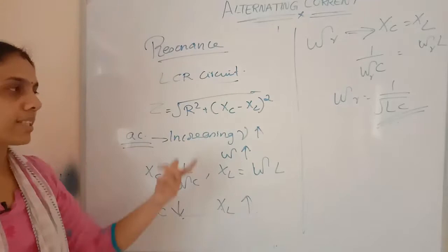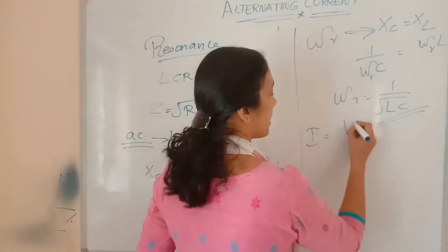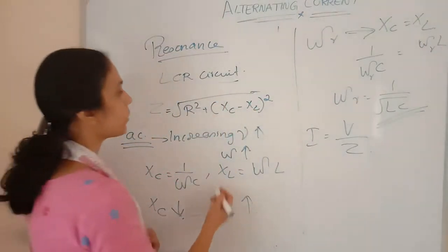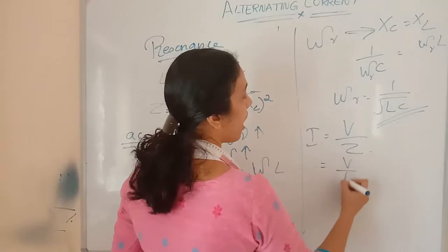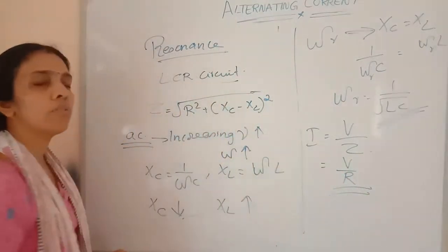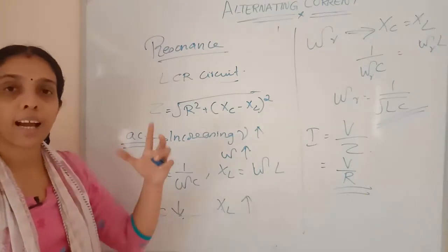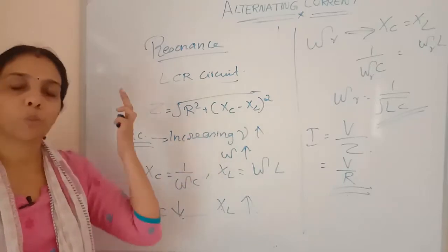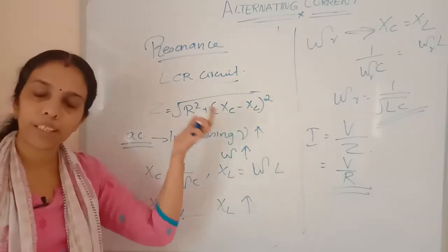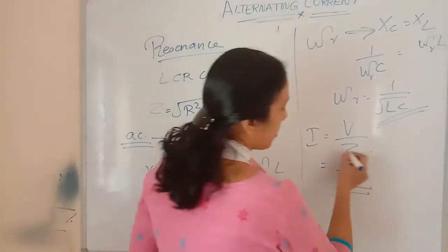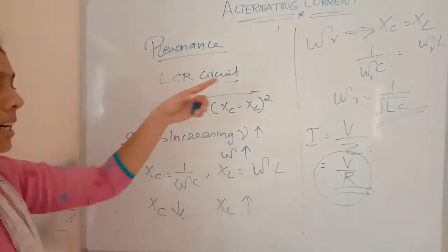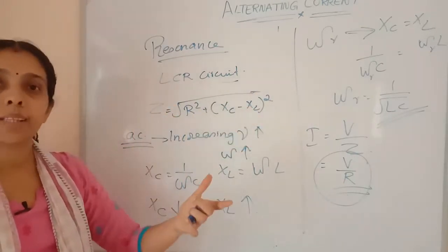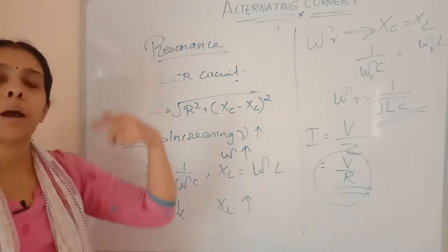At this resonant frequency, what will be the current? I equals V/Z in the case of the LCR circuit. When XC equals XL, only V/R will be relevant at the resonant frequency. At the resonant frequency we do not need to consider XC and XL because both are equal, so the (XC minus XL) term equals zero. We get I equals V/R. At resonance, the current will be maximum.